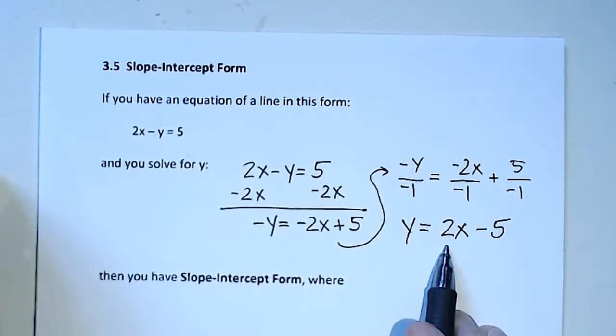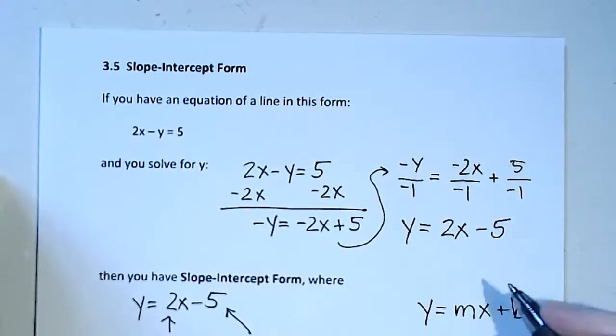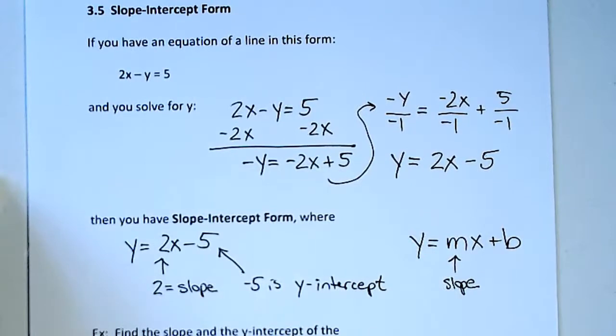We've got slope-intercept form. Two is the slope and -5 is the y-intercept. In general, we say y = mx + b, where m is the slope and b is the y-intercept. In other words, the point (0, b) is on the line.